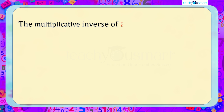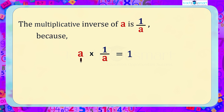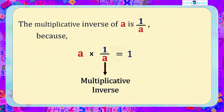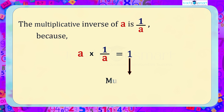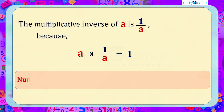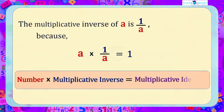The multiplicative inverse of a is 1/a because a multiplied by 1/a equals 1. Here, a is the number, 1/a is its multiplicative inverse, and 1 is the multiplicative identity. That is, a number multiplied by its multiplicative inverse gives the multiplicative identity 1.